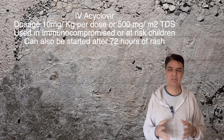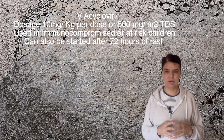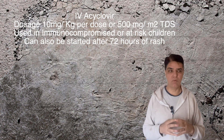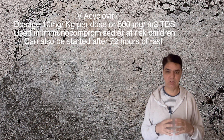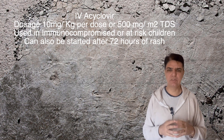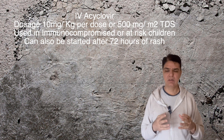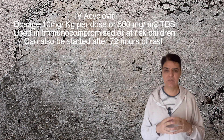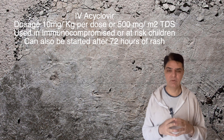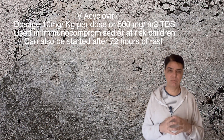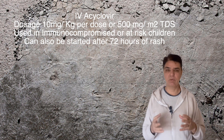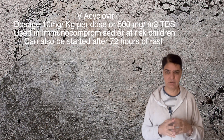IV acyclovir is normally given at a dose of 10 milligrams per kilogram body weight. Some references express the dose in terms of body surface area, in which case it is 500 milligrams per meter squared, given TDS — every eight hours. This should ideally be started within 72 hours of rash development, though in immunocompromised children it can be started even after 72 hours.